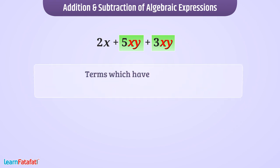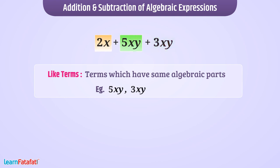Such terms which have same algebraic parts irrespective of coefficient are like terms. If we compare 2x and 5xy then here algebraic parts are not same. Such terms are called unlike terms.